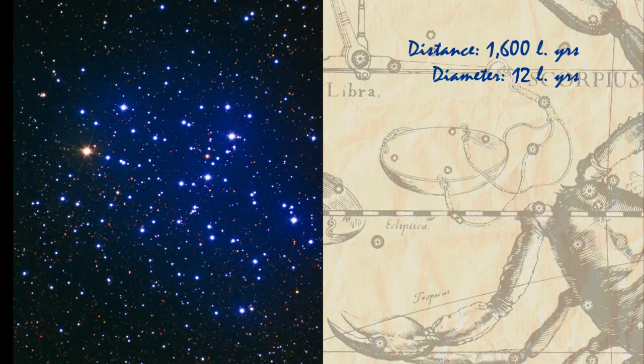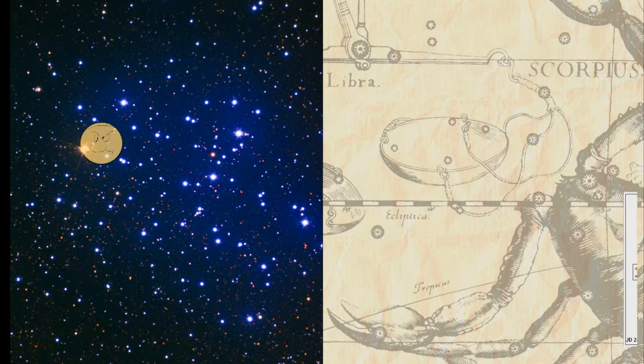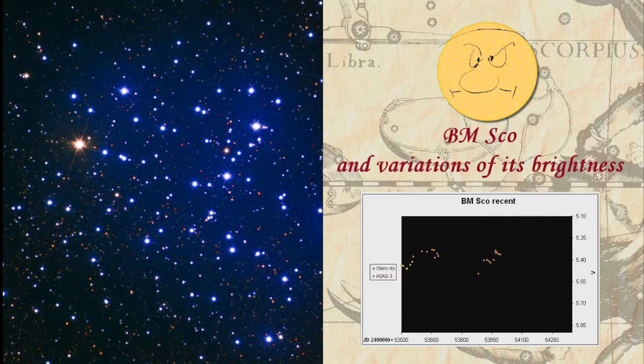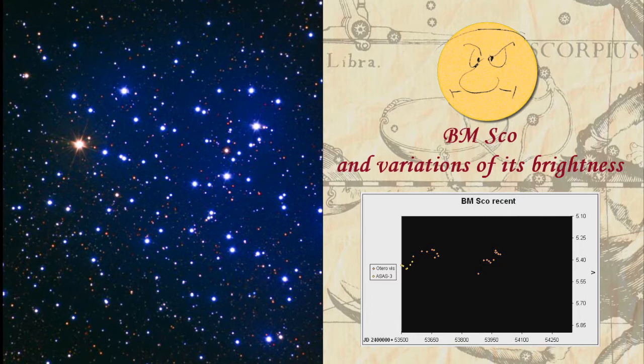Its members are distributed in space over 12 light years. The brightest star in this open cluster is an orange giant BM Scorpius, which contrasts sharply with its blue giant neighbors. BM Scorpius is classified as a semi-regular variable, with its brightness varying from 5.5 to 7 magnitude.